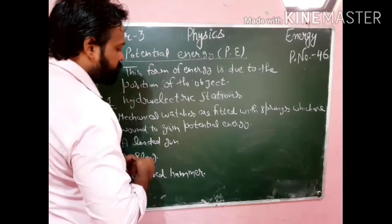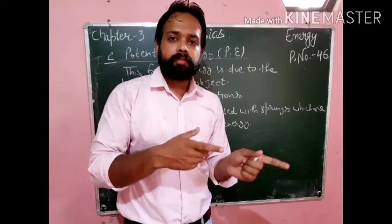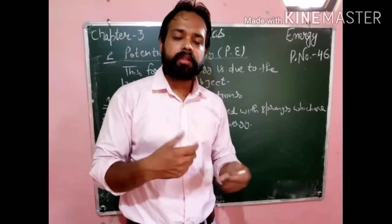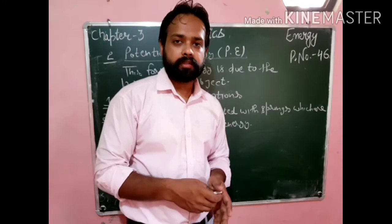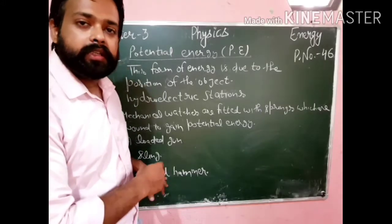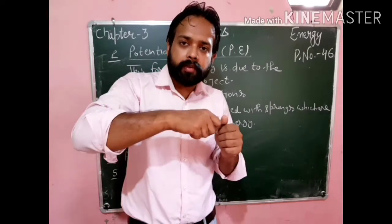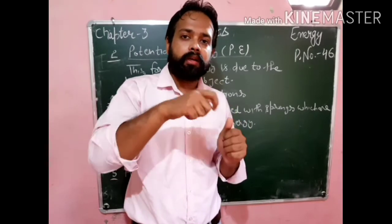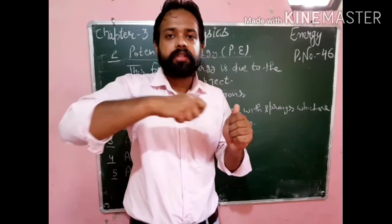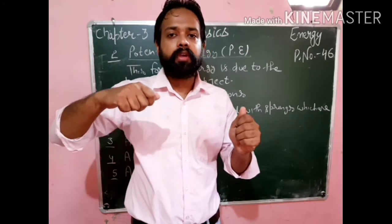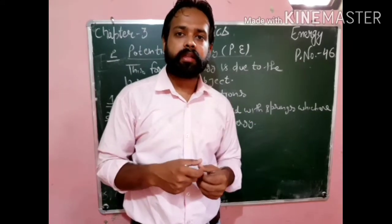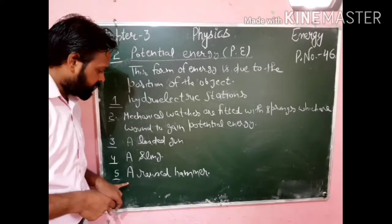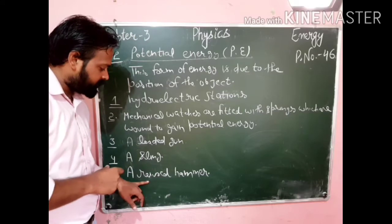Third: a loaded gun has potential energy because the springs of the loaded gun have potential energy. When we press the trigger, the bullet fires — the potential energy of the spring converts into kinetic energy. Fourth: a sling also works on the principle of potential energy. When we stretch the rubber band, the work done is stored as potential energy. When we release the rubber band, the stone shoots like a missile — the potential energy converts into kinetic energy.